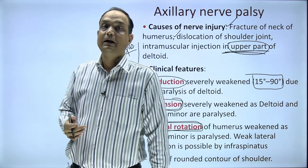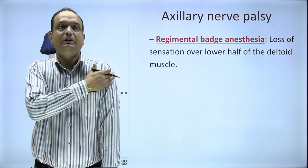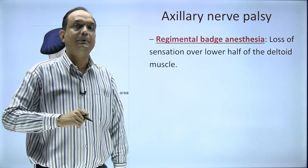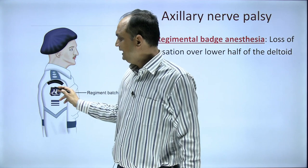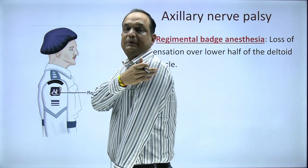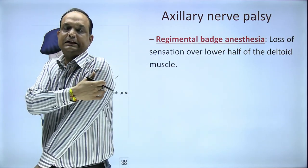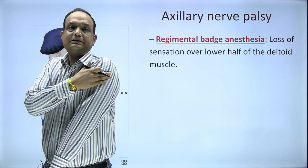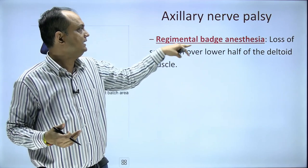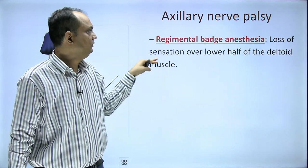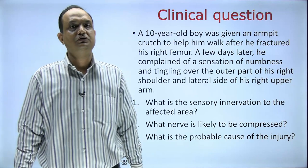There is also loss of the round contour of the shoulder as the deltoid becomes paralyzed. Importantly, cutaneous sensation over the deltoid area is lost, producing a pattern resembling an army regimental badge worn on the upper arm. This is termed 'regimental badge anesthesia' or the 'regimental badge sign,' referring to loss of cutaneous sensation over the lower part of the skin covering the deltoid muscle.